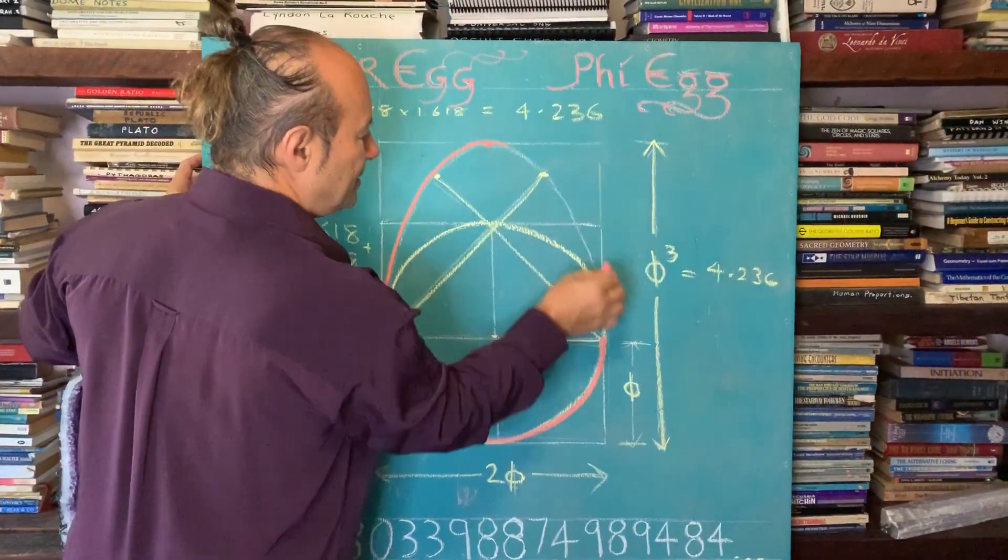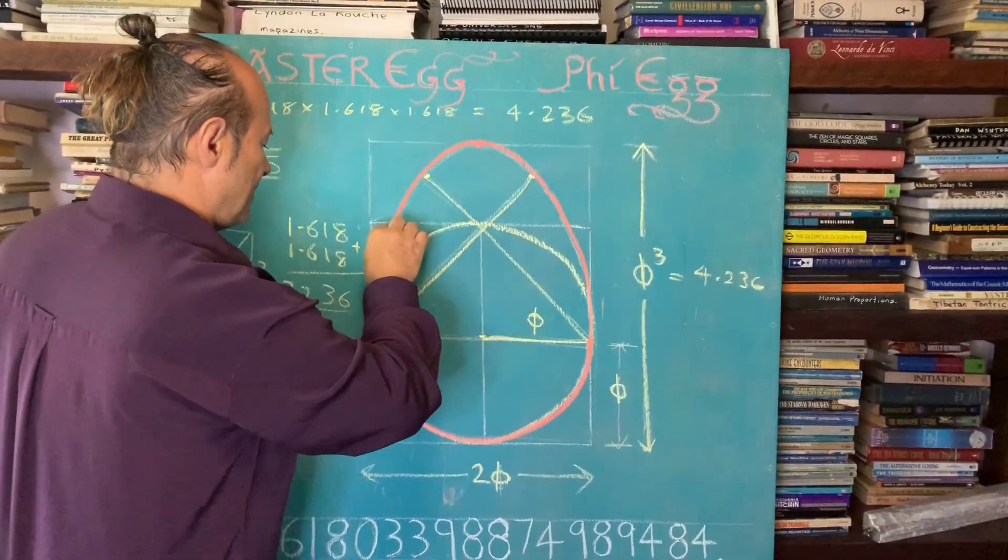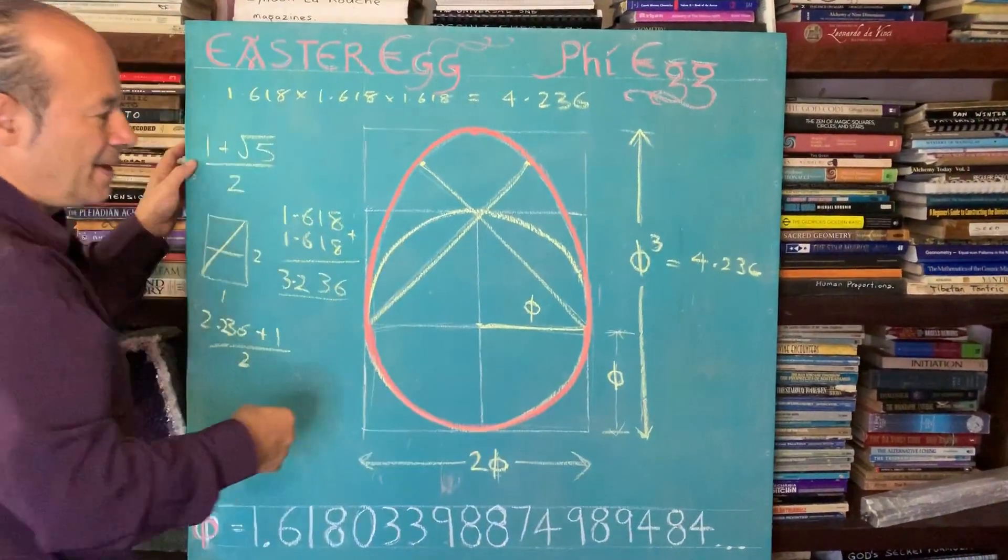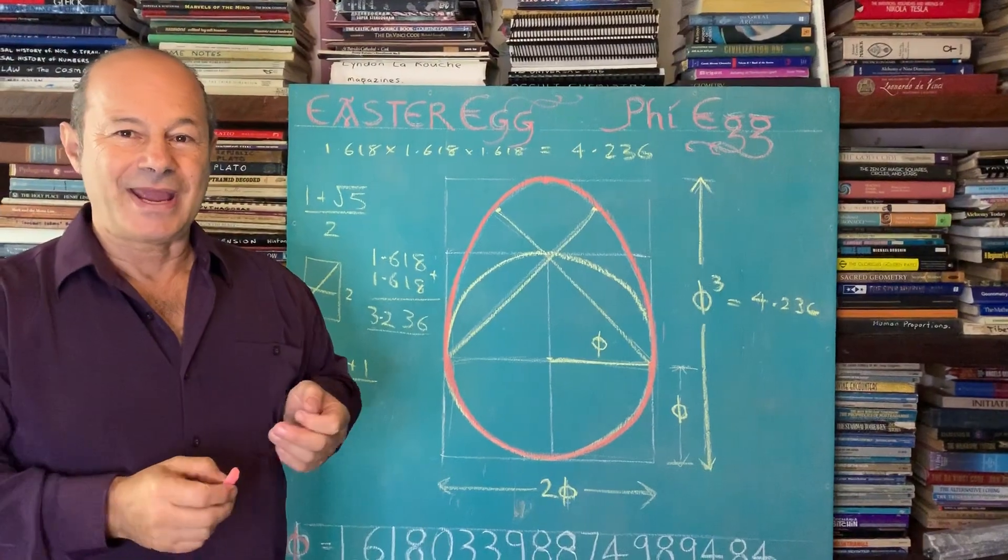So it comes around. And you can see it's a smooth, beautiful, natural shape. And that's how we create the egg shape, the Phi egg.